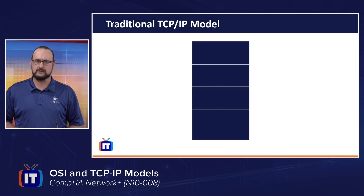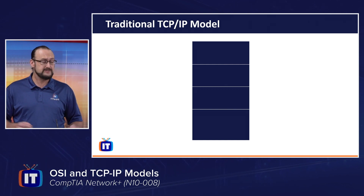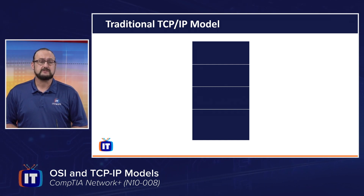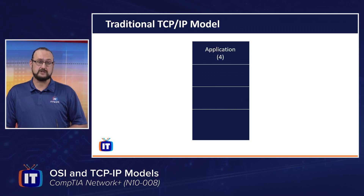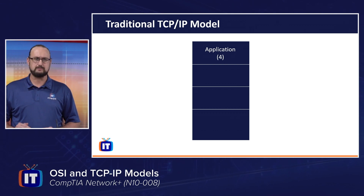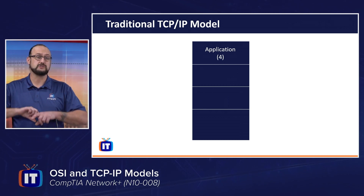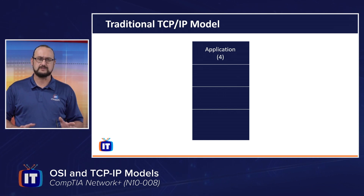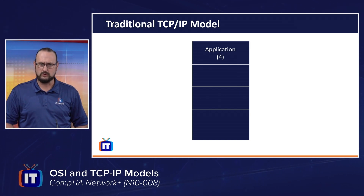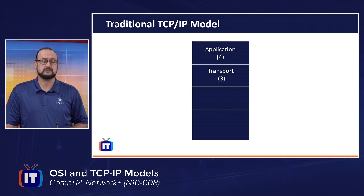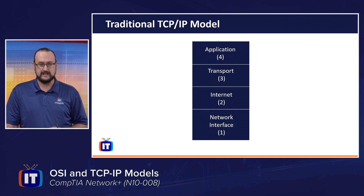Let's dive into what the TCP/IP model is. It's still a layered approach, so it has that similarity with OSI — but you're going to notice there are a lot fewer layers. There are four layers, and we're going to work from a top-down approach. Keep in mind you can explain this from the bottom up, or even starting in the middle for troubleshooting. The four layers are: the application layer, the transport layer, the internet layer, and the network interface layer.